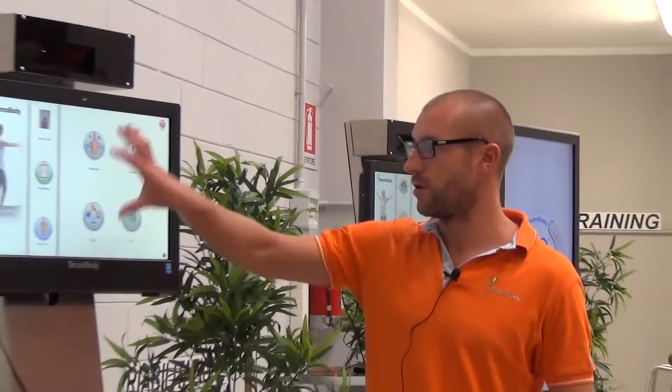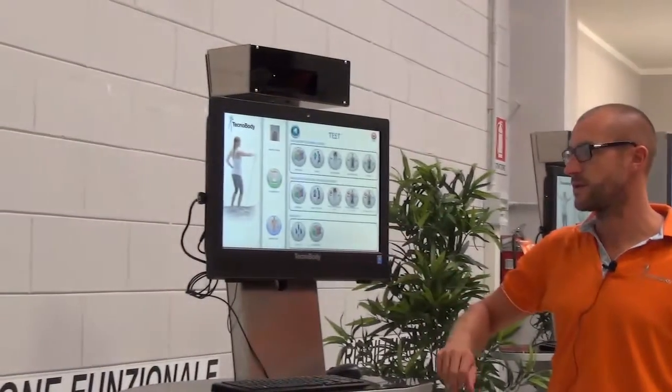We're going now to see and to analyze how a squat jump is performed by our user in this case Davide. So we ask Davide to go in the middle on the platform.